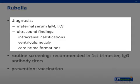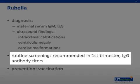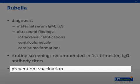Maternal rubella infection is diagnosed serologically. Rubella-specific IgM can be detected by ELISA four to five days after onset of rash, while IgG peaks one to two weeks after rash onset. Routine screening is recommended in the first trimester. Rubella infection of the fetus is suspected with particular ultrasound findings including intracranial calcifications, ventriculomegaly, microcephaly, cardiac malformations, and meconium peritonitis. Rubella can be prevented through vaccination, although it is a live attenuated virus, so it should not be given within one month before or during pregnancy. In the United States, foreign-born pregnant women are at higher risk due to lower vaccination rates.